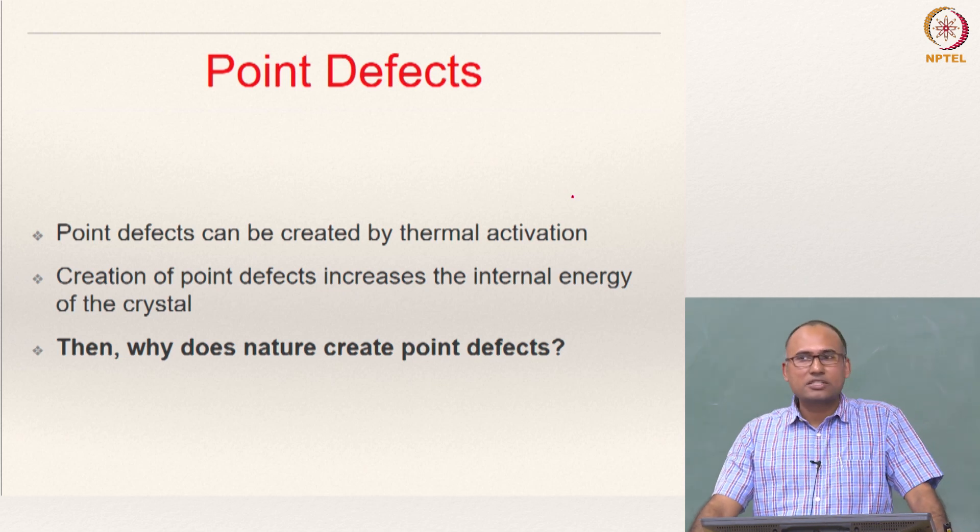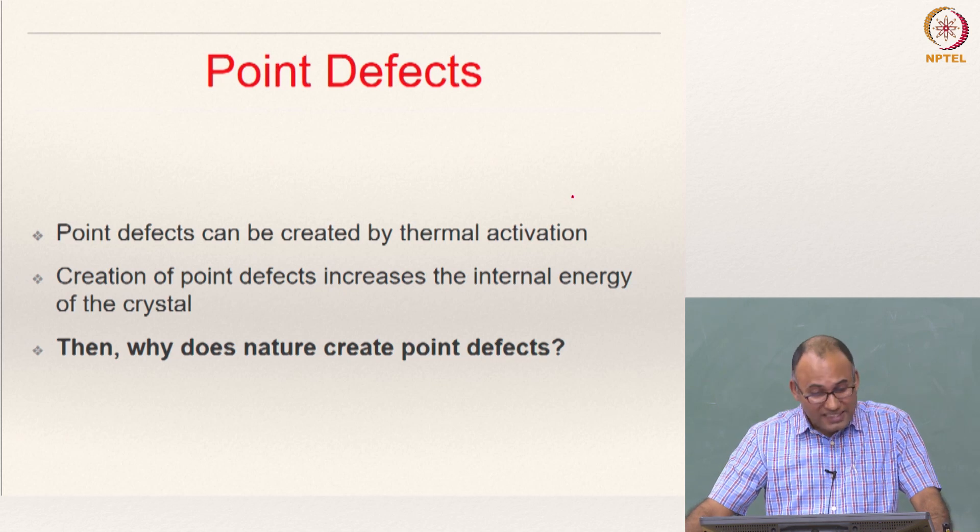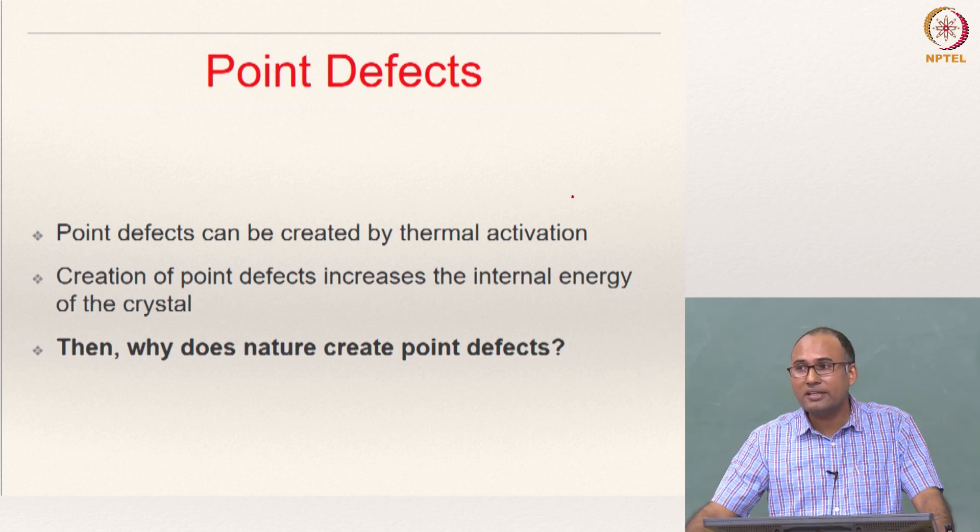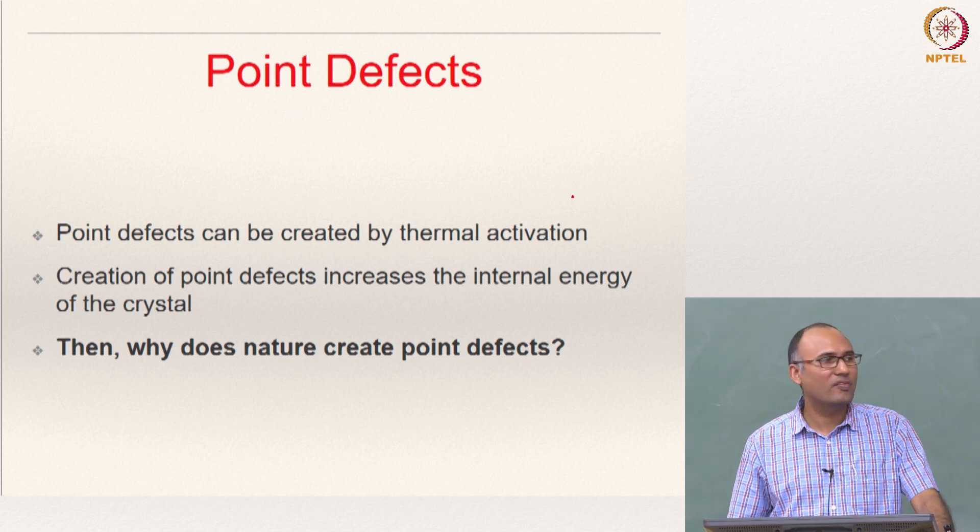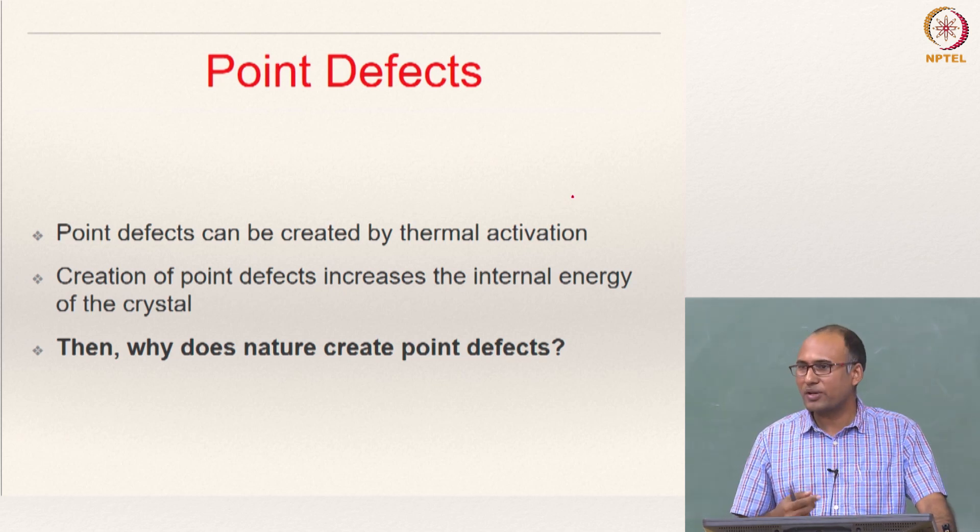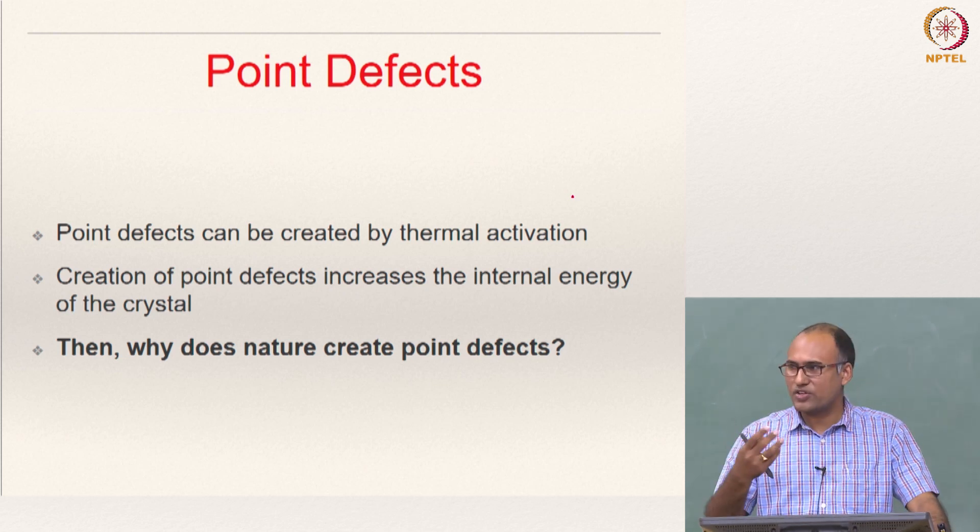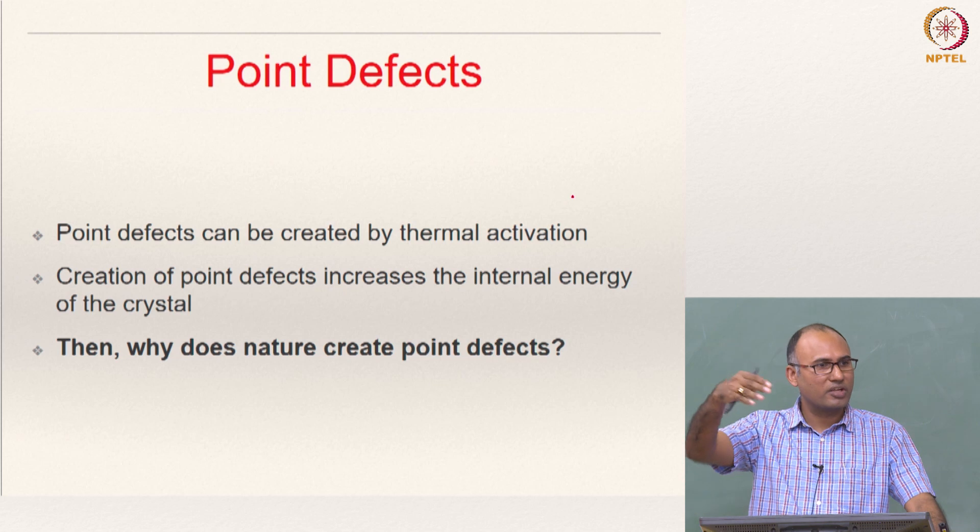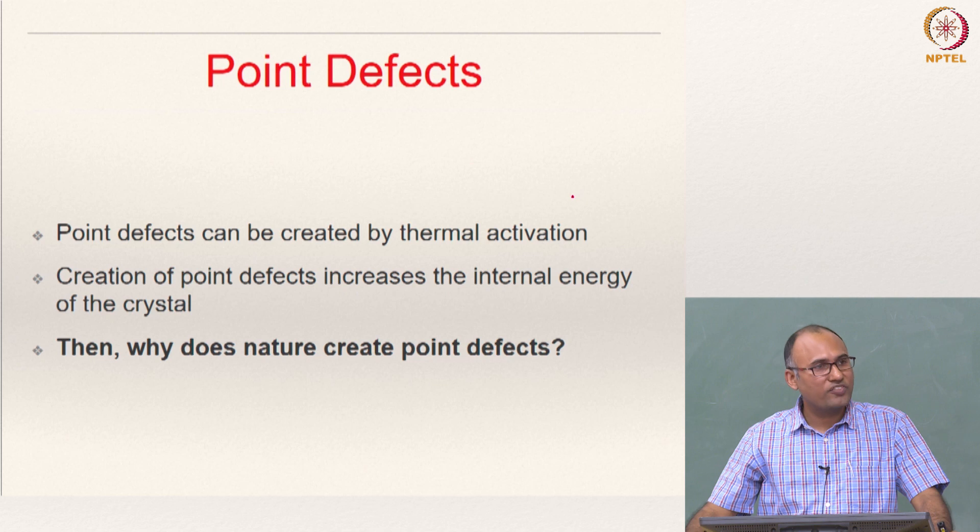So how can you create point defects? Is it possible to create point defects? Yes, they can actually be created by thermal activation. That means, if you heat, you increase the temperature of a material, then what will you do? By increasing the temperature, you are providing energy to your atoms and then if you provide sufficient energy, the atoms can actually jump out of their equilibrium position and then move around. So creation of point defects.